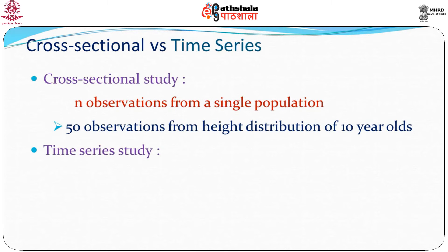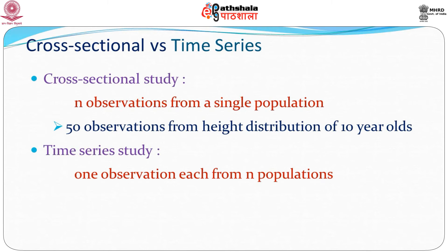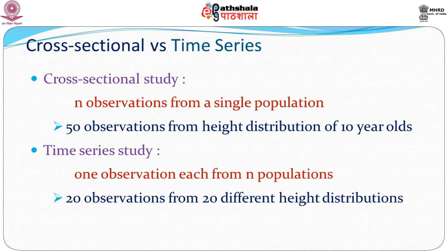In a time series study, we have one observation each from multiple populations. Looking at a single girl over 20 years: the first observation at age 0 comes from the height distribution of 0-year-old girls; the second observation comes from the height distribution of 1-year-old girls; similarly, the 15th observation comes from the height distribution of 15-year-old girls. So there is a single observation coming from n different populations — 20 observations from 20 different height distributions in our example.